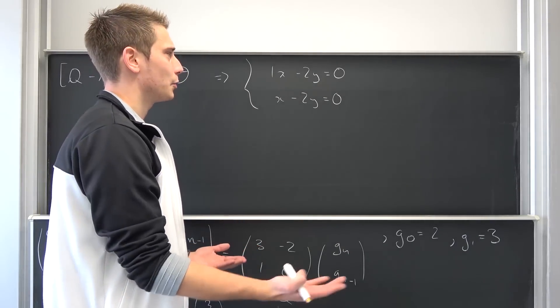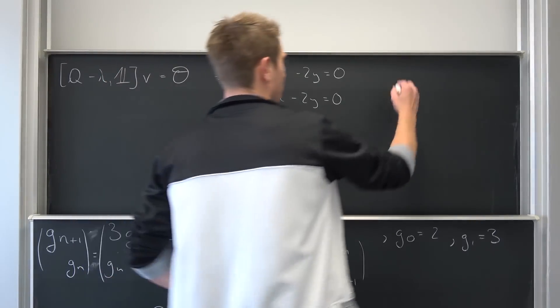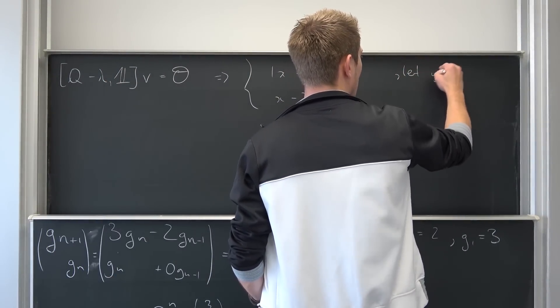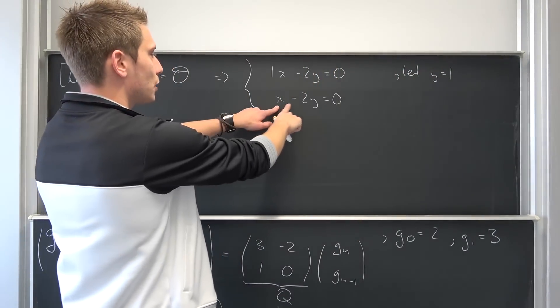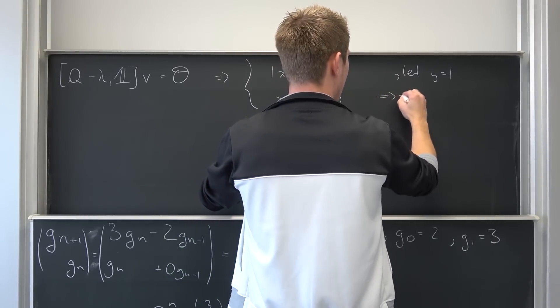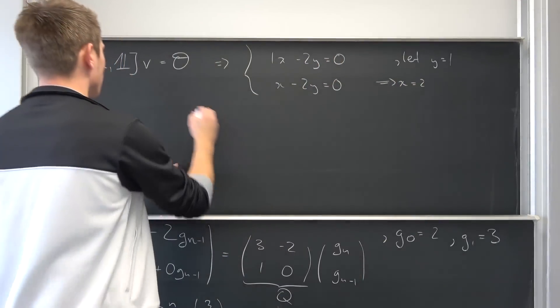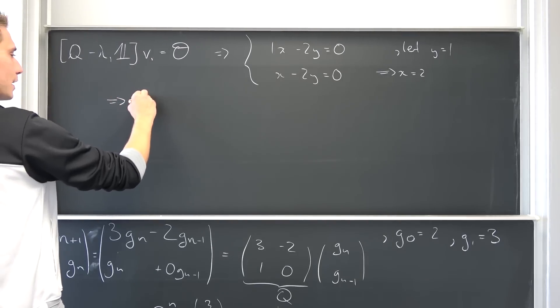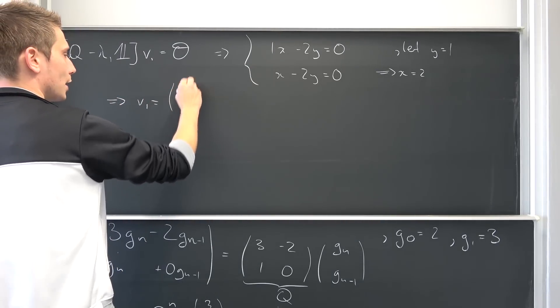Meaning we have 1 free parameter. Let's choose y to be equal to some t out of the real numbers. This is going to make up our eigenspace, but it really doesn't quite matter. We can choose any or all real numbers. So let's choose 1 for example. Let y be equal to 1. Meaning we are going to end up with x being equal to 2. Meaning our first eigenvector v_1 is thus nothing other than 2 and 1.